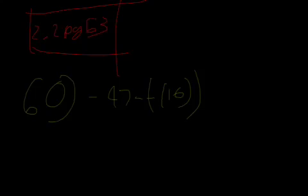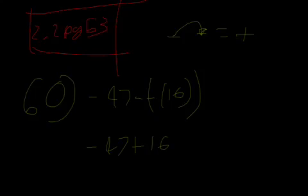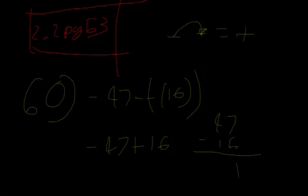So what do we do here? Remember, we've got a minus and a minus. Minus times minus equals plus. So this is actually negative 47 plus 16. I do it like this: 47 minus 16 equals 31, and then I put the negative sign on that. So that's why it's negative 31.